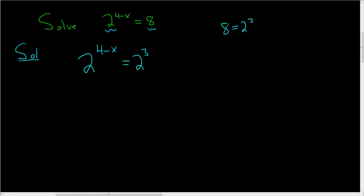At this point, the bases are the same. We have a 2 here, and we have a 2 here. So we can drop the bases and set the exponents equal to each other. 4 minus x is equal to 3.